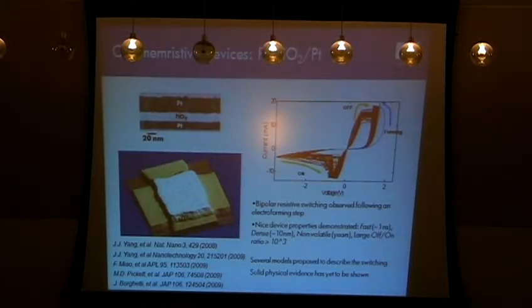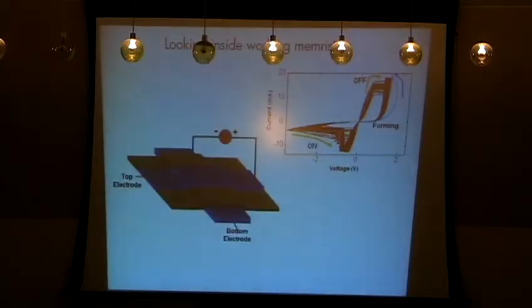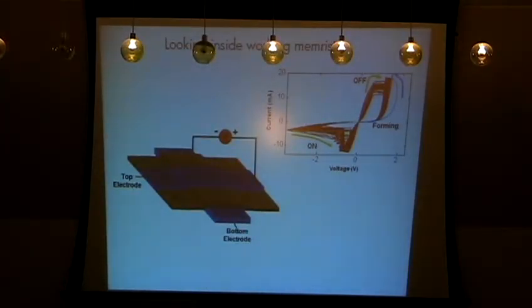Okay, so here are some memristive devices. These are the titanium dioxide-based devices. In fact, here's a number of publications just recently in the last year or two that have come out using these kind of devices. We've got very nice bipolar-resistant switching occurring, which is initiated by an electroforming step. We see very nice device properties that have been demonstrated: fast, dense, nonvolatile, large on-off ratio. In terms of a physical understanding for how these devices operate, there's a number of models that have been proposed to describe this. One of the leading candidates, as has been mentioned, involves oxygen vacancies. And nonetheless, I don't think I'm going out on a limb to say that solid evidence for what's going on has yet to be shown. I think some of the animated discussion that we saw today is an illustration of that. So what I've been inspired to do is try to look inside these memristors and try to understand what's going on.